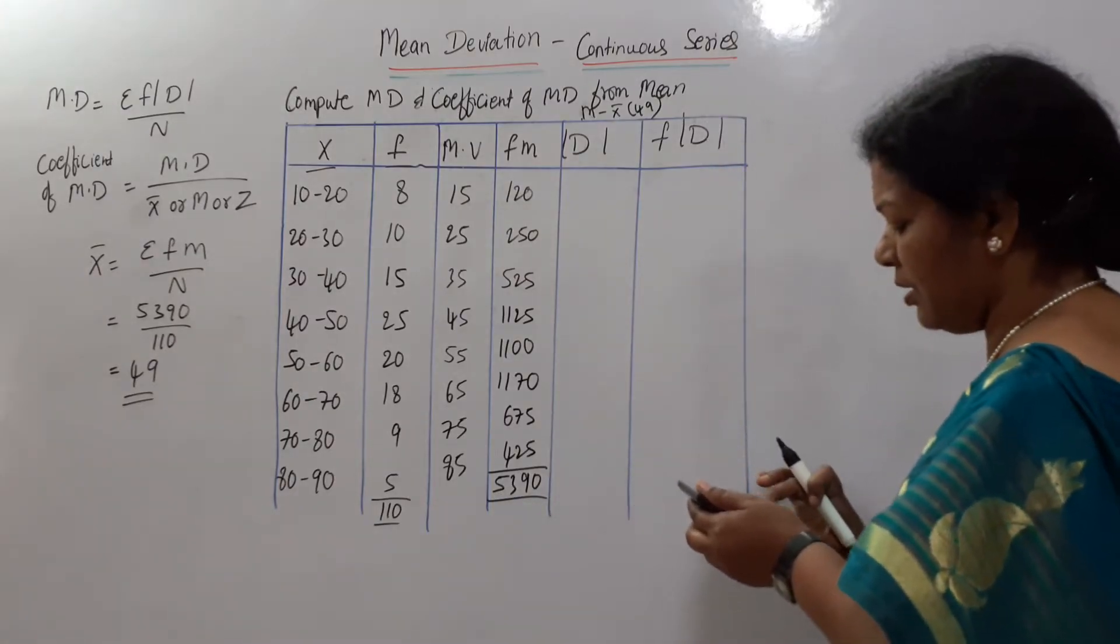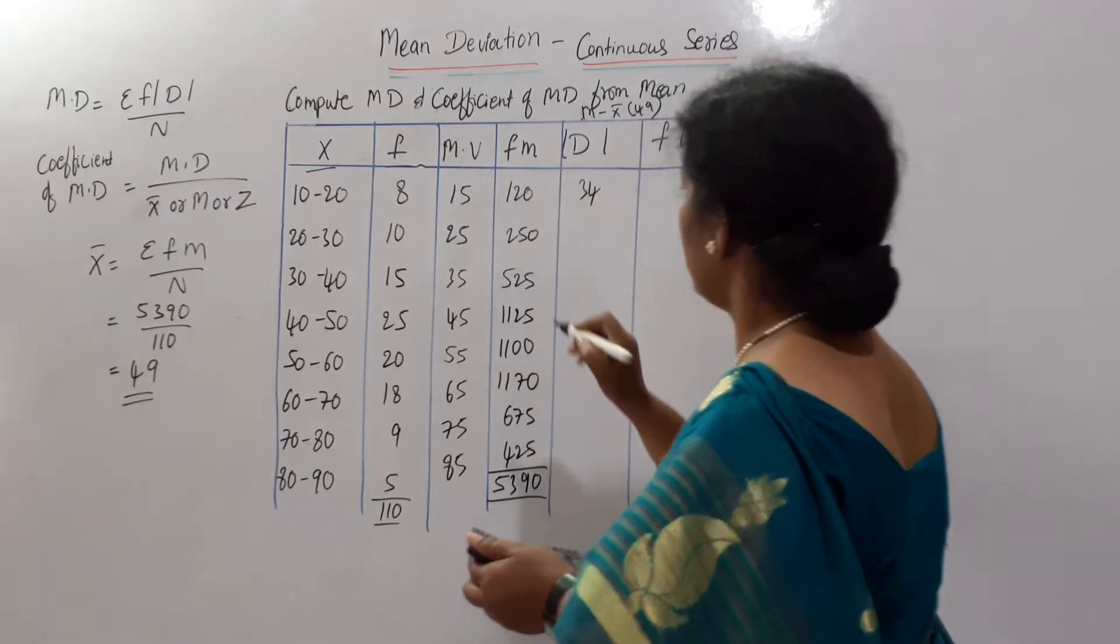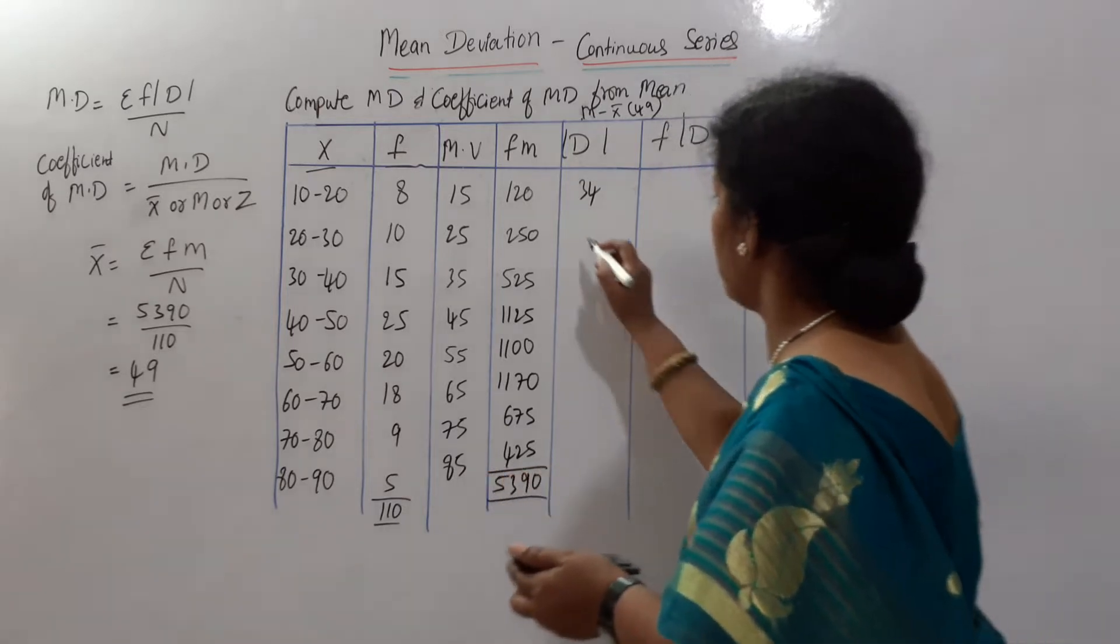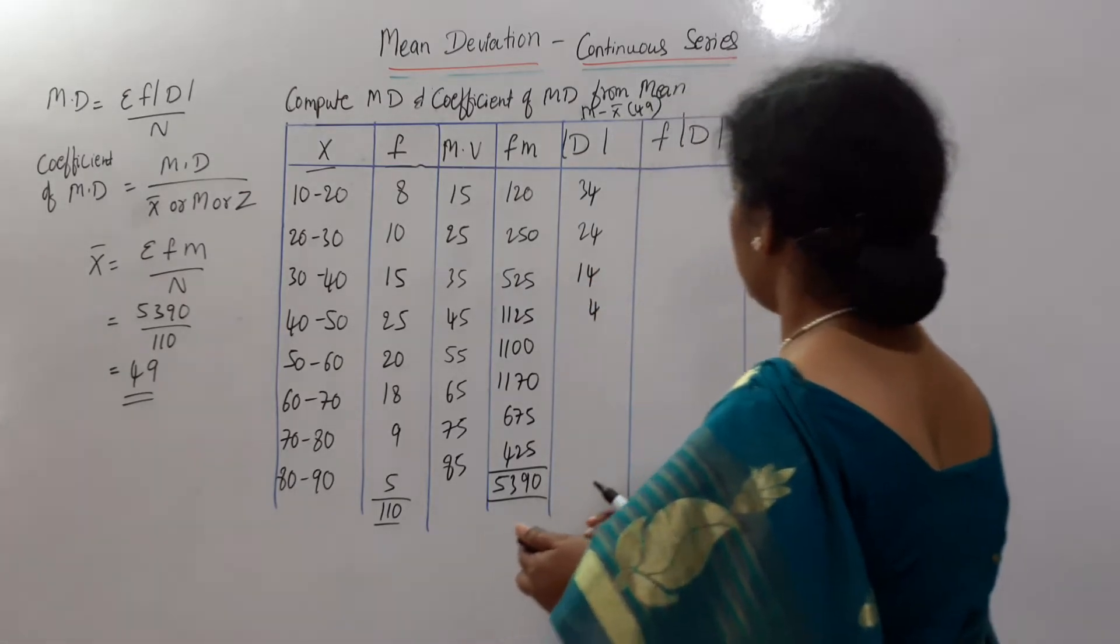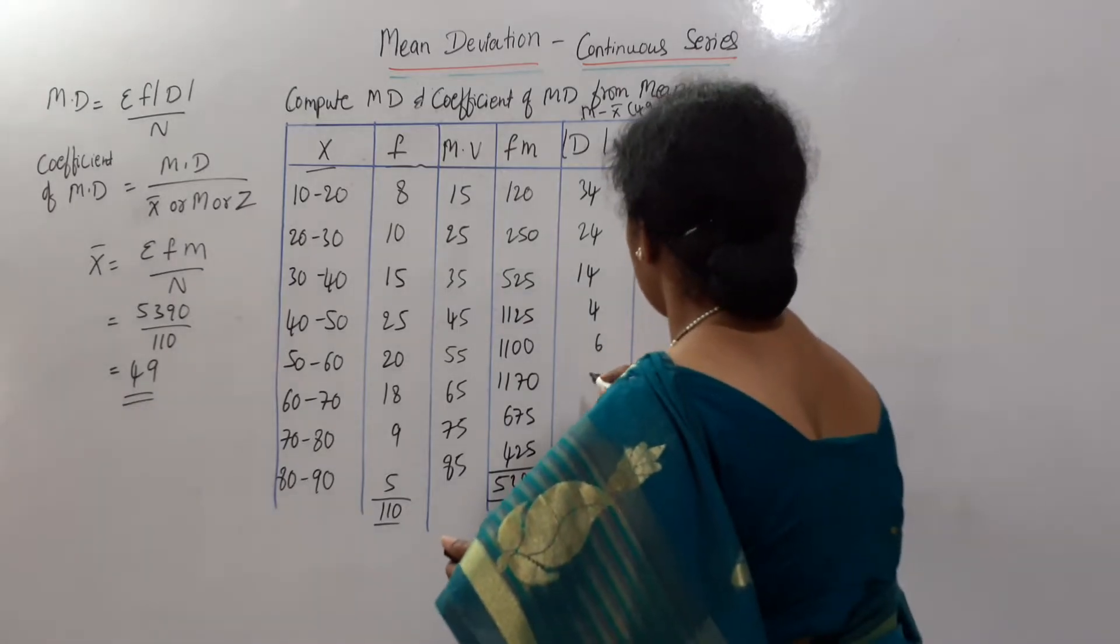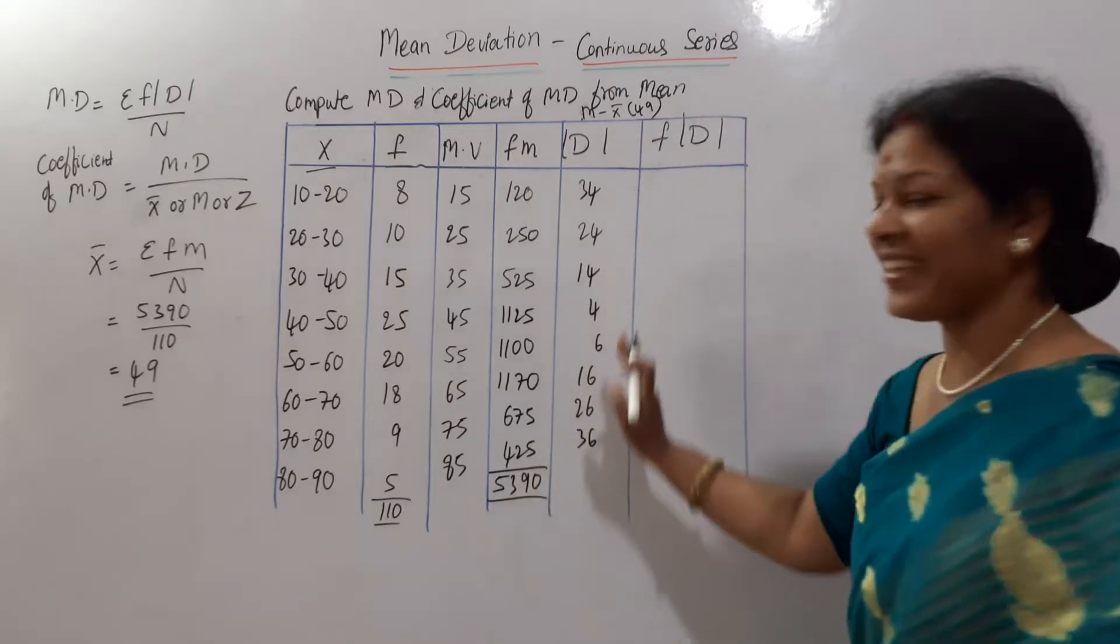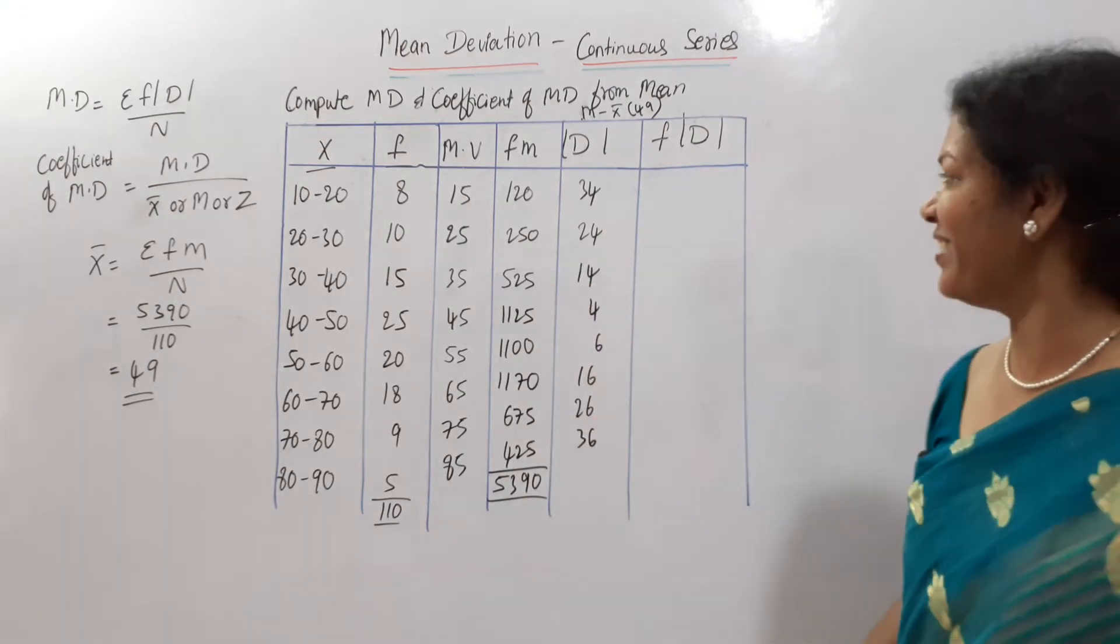Or we can say directly 49 minus 15, 34. Let us say 49 minus 25, 24. Like this only 14 and 4, 55 minus 49. 65 minus 49, 16, 26, 36. This calculation, even in student life also used to do. Once if I get an idea, according to the needed calculations.